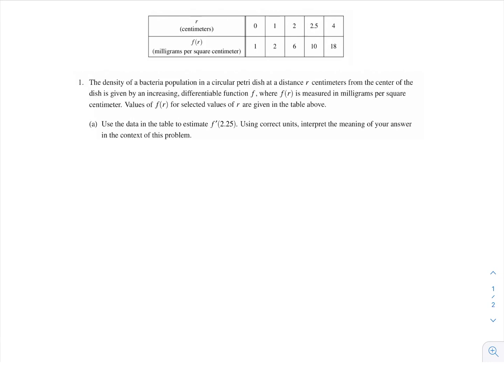Okay, so we have this problem that has to do with density of a bacterial population. When I'm reading these questions for the first time, I like to underline things so that later on when I need to refer to the units, I can quickly point them out, and it helps with processing information. So this bacteria is in a circular petri dish at a distance r centimeters from the center of the dish, and it's given by this increasing differentiable function f, where f(r) is measured in milligrams per square centimeter. And then we have this data table that corresponds to how much bacteria there is at r centimeters from the center of the dish.